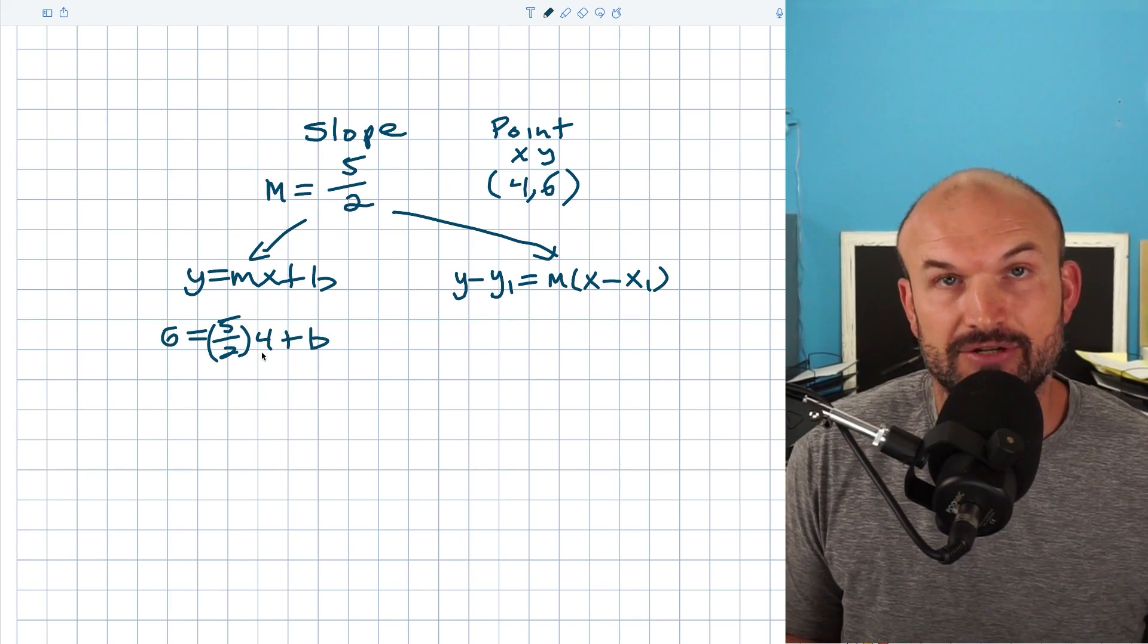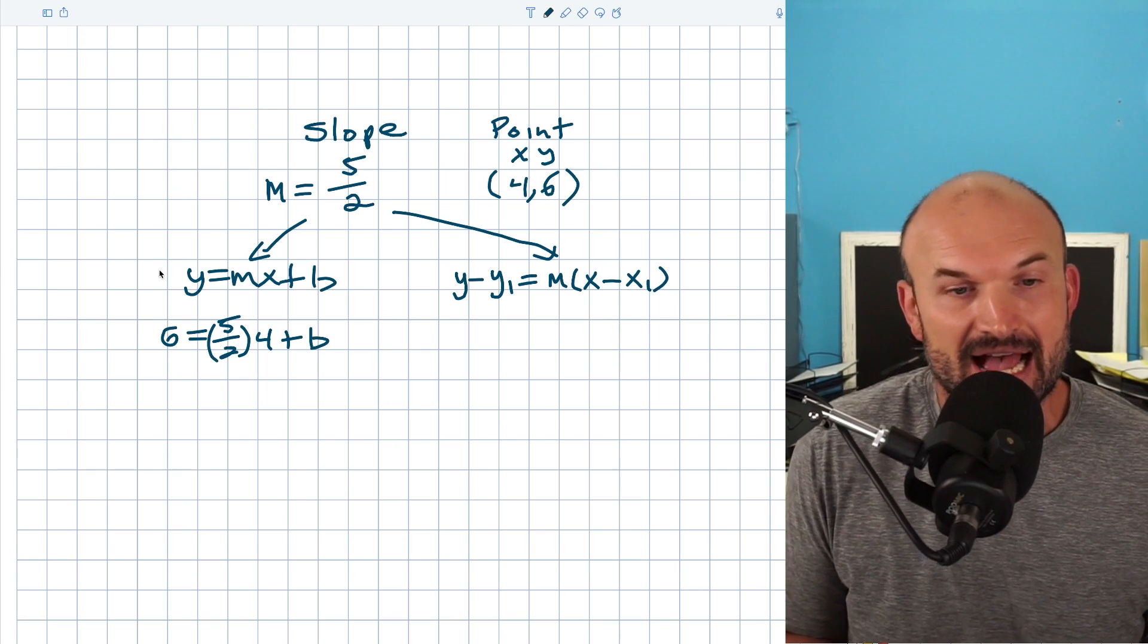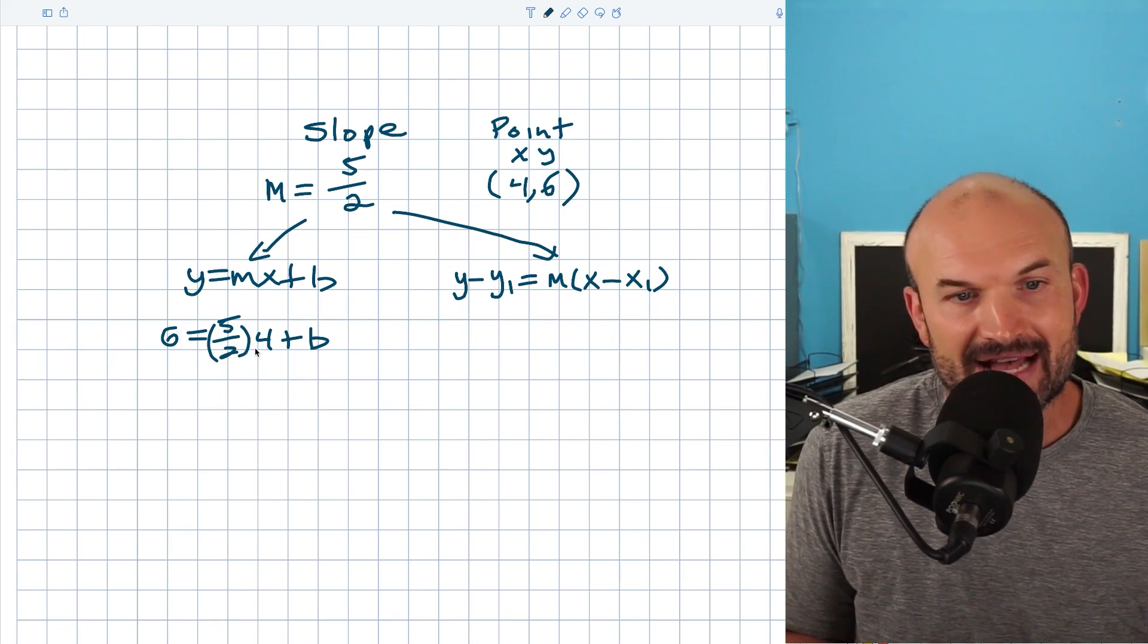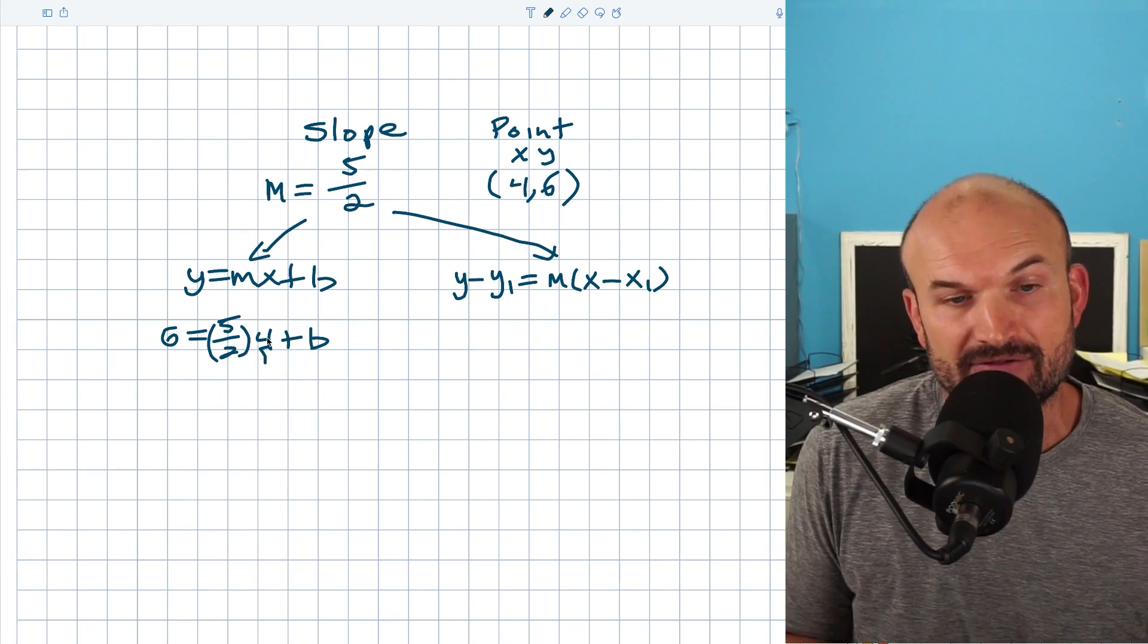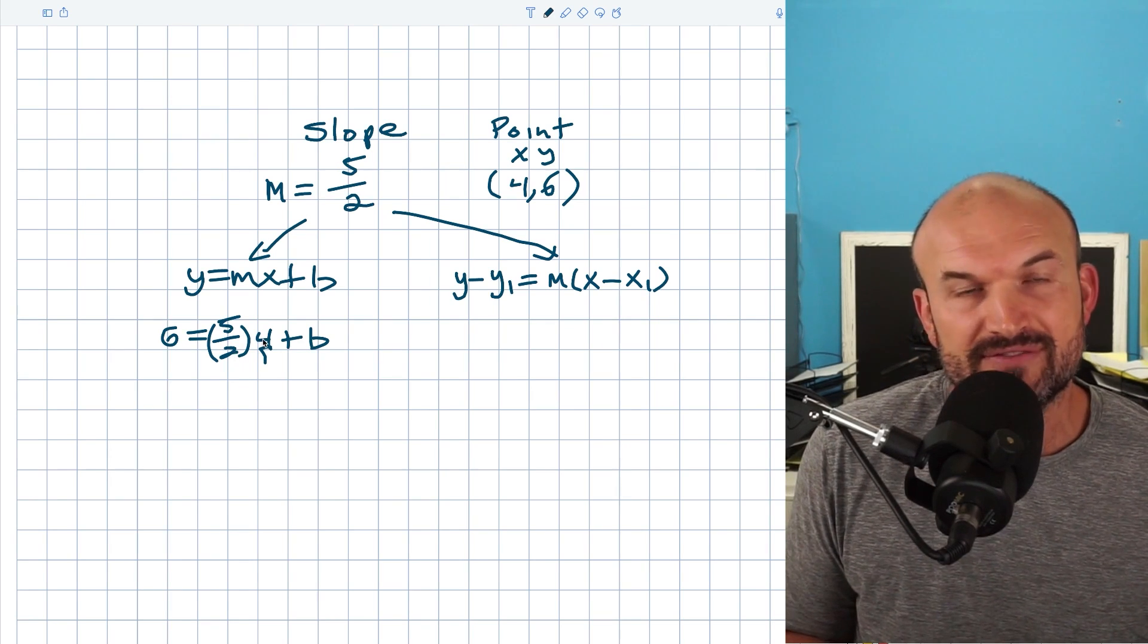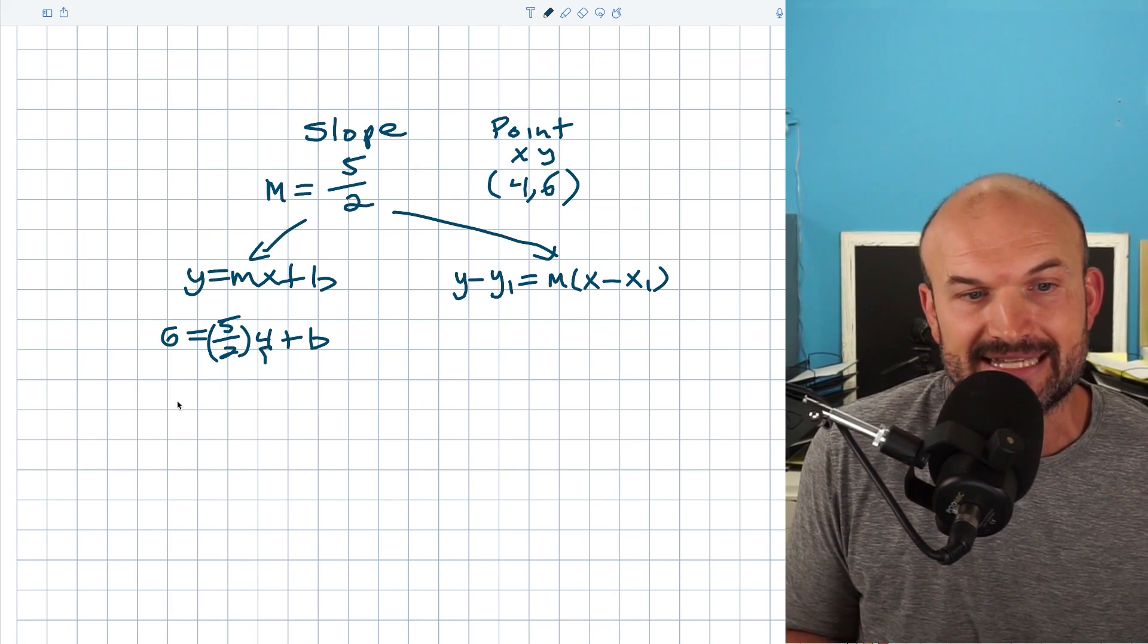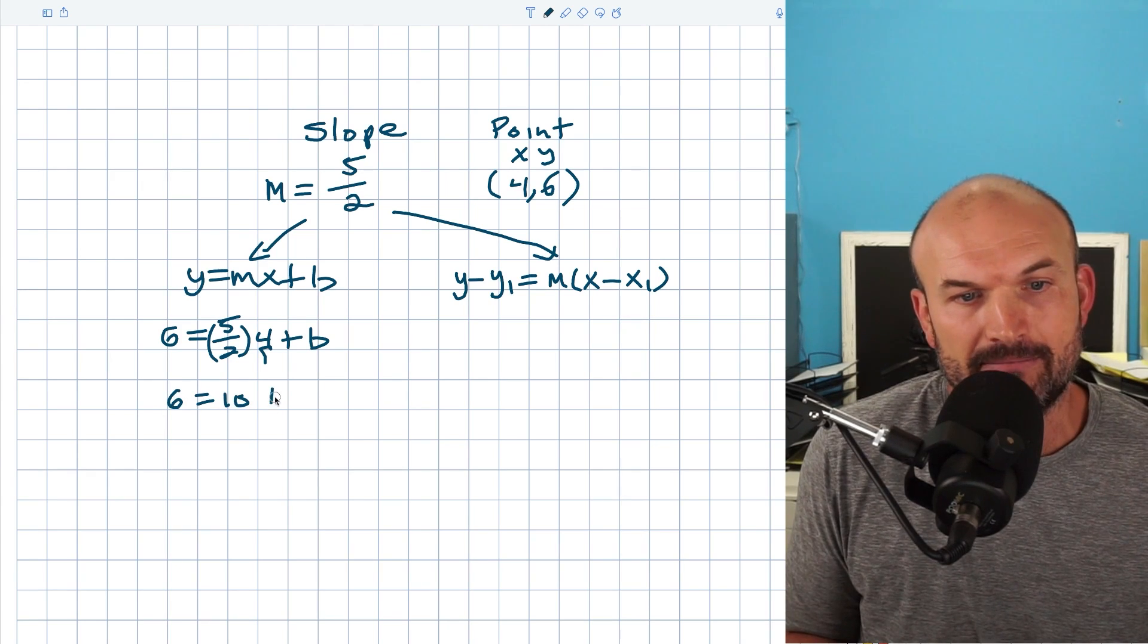So now you can see here, all I simply need to do is go ahead and simplify this and then solve for b. So five halves times four. I can rewrite four as four over one. Therefore, the two divides into the four two times. Two times five is going to be a 10. So six equals 10 plus b.